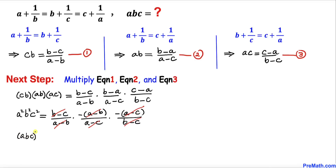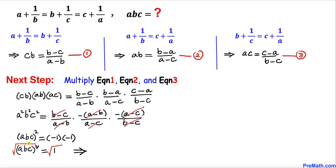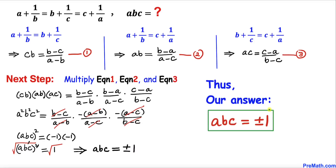So we end up with (a times b times c) squared equals negative one times negative one, which equals positive one. Taking the square root on both sides, since the square and square root undo each other, we get a times b times c equals positive or negative one. That's our answer. Thanks for watching and please don't forget to subscribe to my channel for more exciting videos.